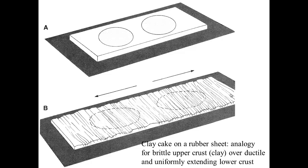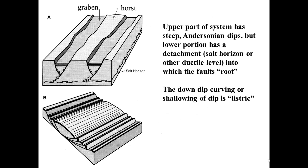The simplest way to think about extension and normal faulting is the famous experiment by geologist Ernst Cloos. He put a clay cake on a rubber sheet and as he pulled the rubber sheet it extended uniformly — kind of a ductile, uniformly extending lower crust. Above it the clay actually localized the deformation and produced lots of little faults. If you recall our earlier discussion of circles deforming into ellipses, this gives a sense of how if you stand back far enough it looks like pretty uniform extension.